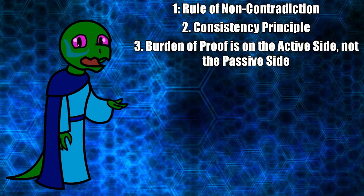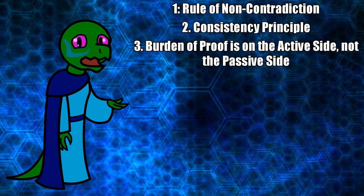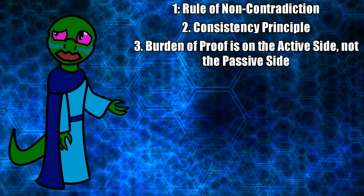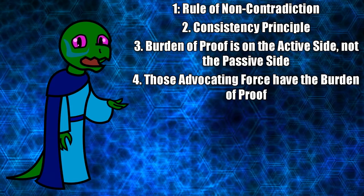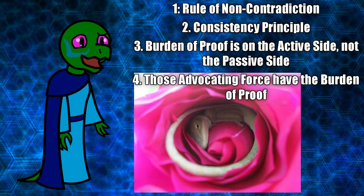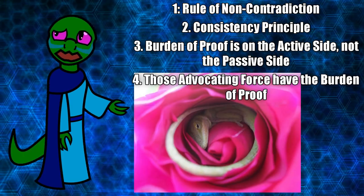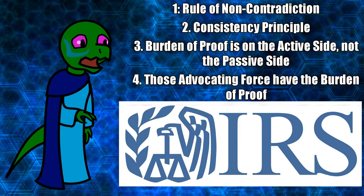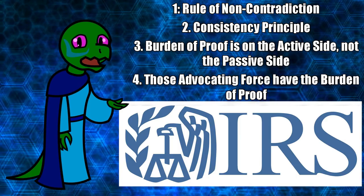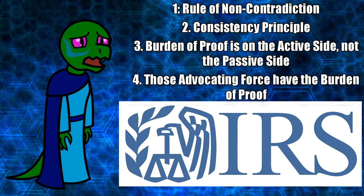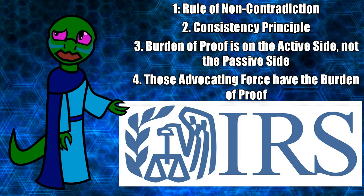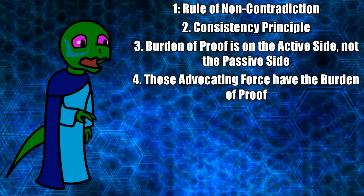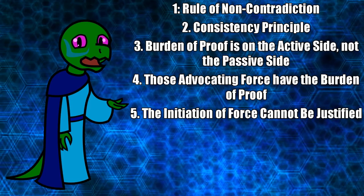All that burden of proof argues is that if a passive side is wrong, the burden of proof is on the active side to prove it. Force by definition is active. Therefore, those advocating for force have the burden of proof. If you're minding your own business, I have to justify any action I take against you or wish to have done to you. Let's use a random example: say I want to take your money. Because everything I've described so far is absolutely logically consistent, I cannot avoid having to justify my actions without rejecting all of reason entirely by violating the consistency principle — even if I call myself a government. From this, we get that the initiation of force cannot be justified.